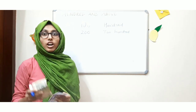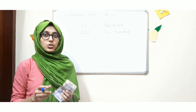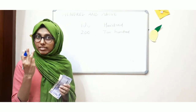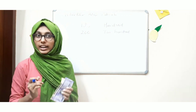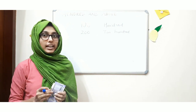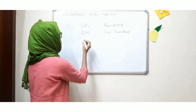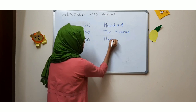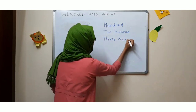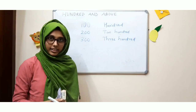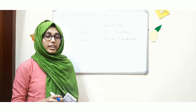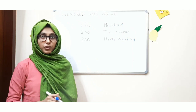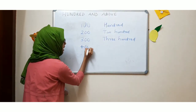Now suppose I have one more 100 — one more 100. So 100, the other 100, and one more 100. There are 3 hundreds — 300 rupee notes. So how much will that be? 300. Now how many 100s? 4. So that will become 400.